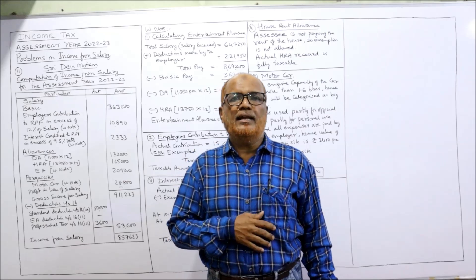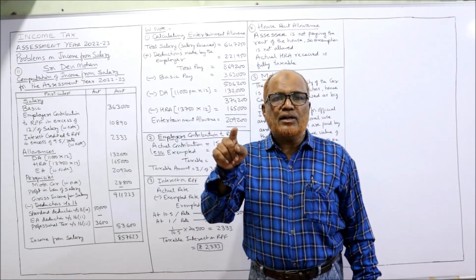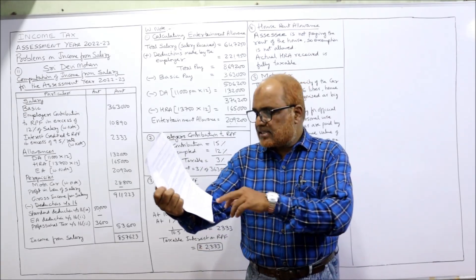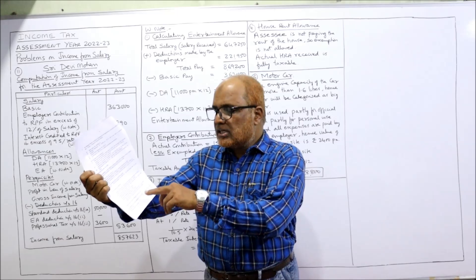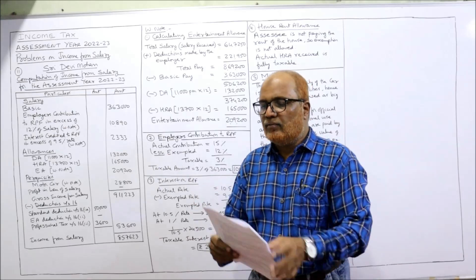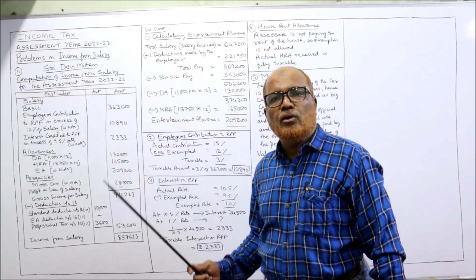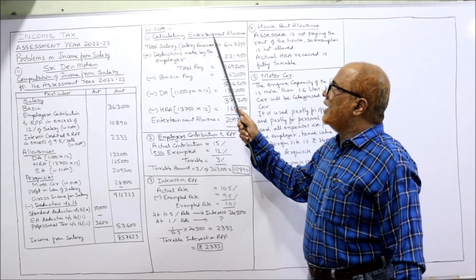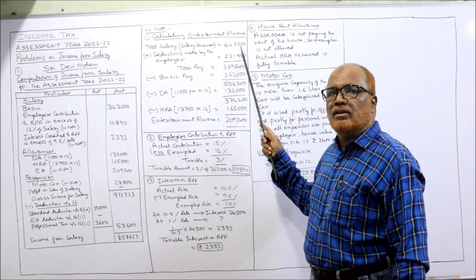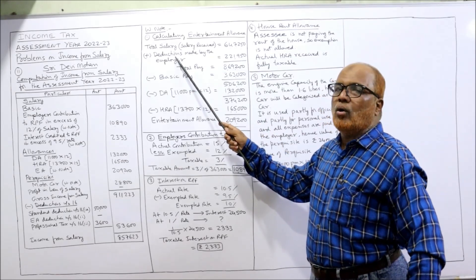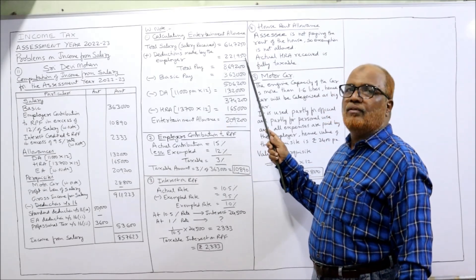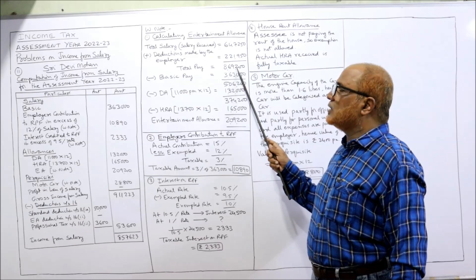For computing income from salary, we need the gross salary, not the net salary. So whatever deductions are made, we add them back to the net salary. The net salary is six lakh forty-seven thousand two fifty. To this we add back total deductions of two lakh twenty-one thousand nine hundred fifty, giving us a total gross salary of eight lakh sixty-nine thousand two hundred.